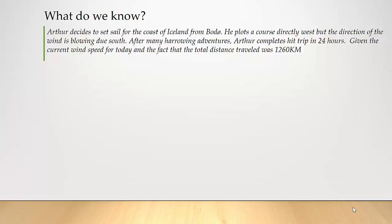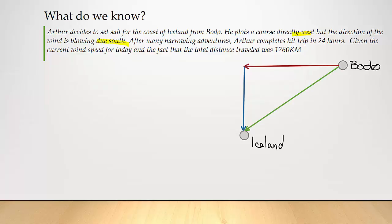We know we're setting sail from Buda, so here we can depict Buda and label it. The problem says we're going due west, so here's our vector heading due west, and then the wind is blowing due south — there's our vector for the southerly wind. The resultant vector using a head-to-tail method of addition would get us to Iceland, and that would be our resultant vector.